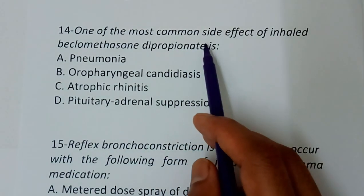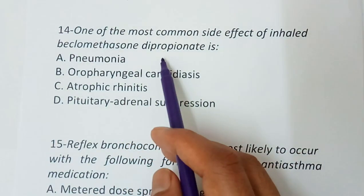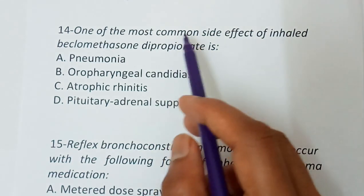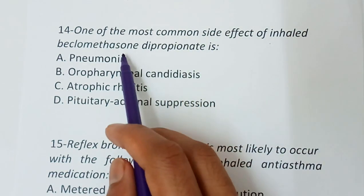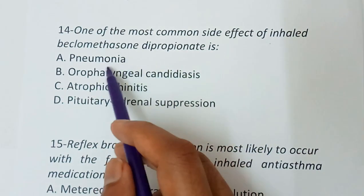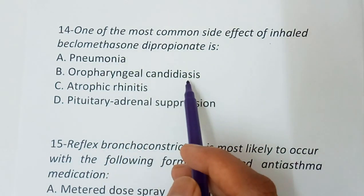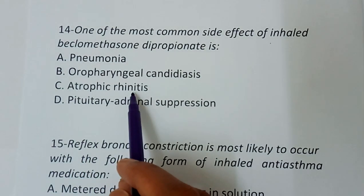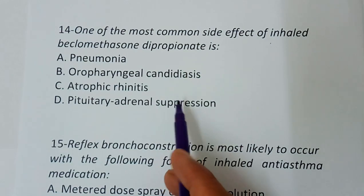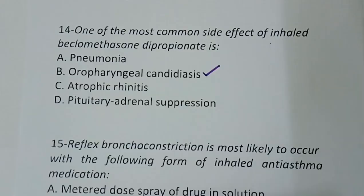Question number fourteen: One of the most common side effects of inhaled beclomethasone dipropionate — pneumonia, oropharyngeal candidiasis, atrophic rhinitis, or pituitary-adrenal suppression. The correct answer is oropharyngeal candidiasis.